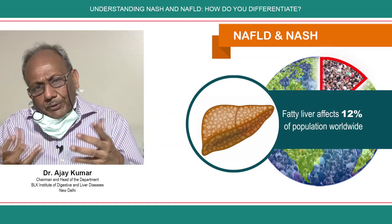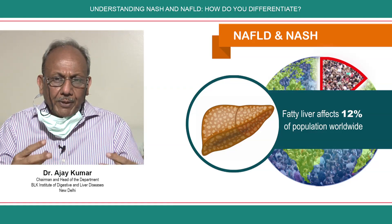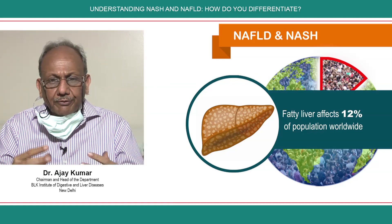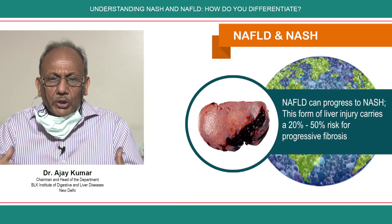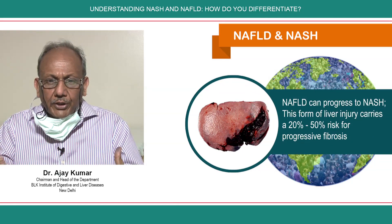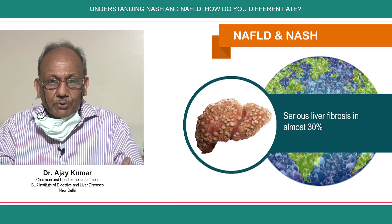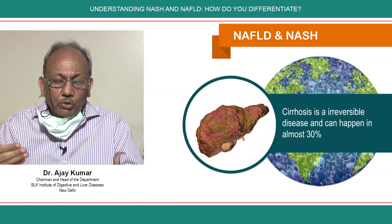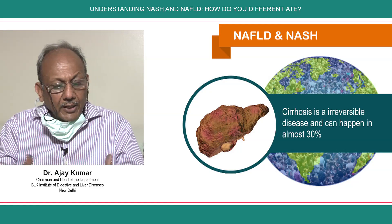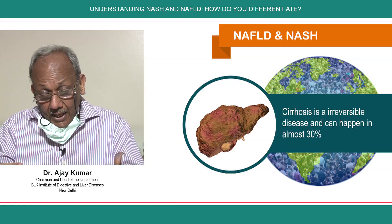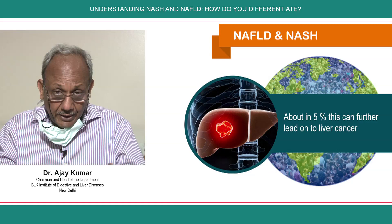Now why is it important? If it is steatohepatitis — liver fat with inflammation — it has the potential to undergo serious liver injury. It can cause serious liver fibrosis in almost 30%. It can lead on to liver cirrhosis, which is an irreversible disease, happening in almost 30%. And then in about 5% this can further lead on to liver cancer.